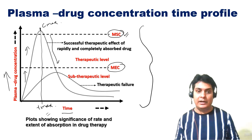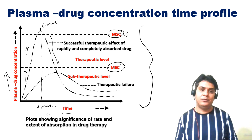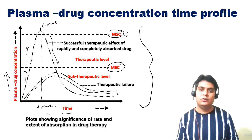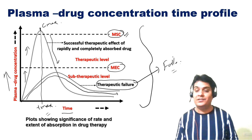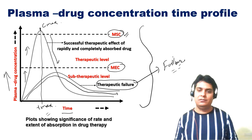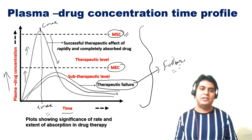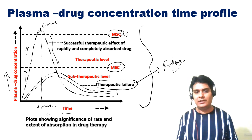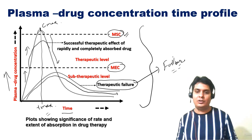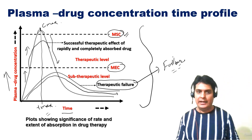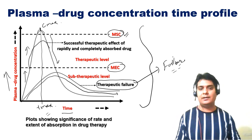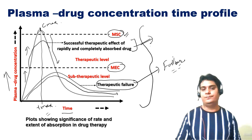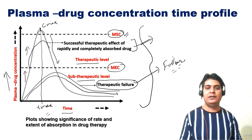After the steep increase, a steep decrease is also observed — that is the post-absorption phase. If the plasma drug concentration-time profile does not achieve the Minimum Effective Concentration, and the drug is finally eliminated, that falls in the category of therapeutic failure. However, if the concentration crosses the Maximum Safe Concentration, the drug can become toxic. The successful therapeutic effect is seen for a rapidly and completely absorbed drug that stays within the therapeutic window — between the therapeutic level and the toxic level.